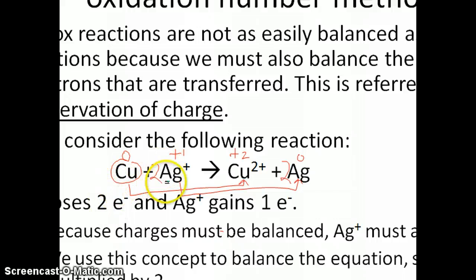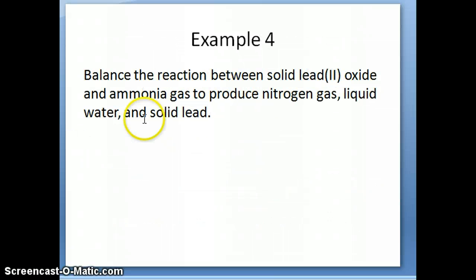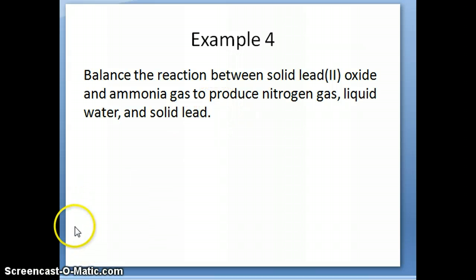You have to consider both the elements to be balanced, but you also have to consider that the charges have to be balanced. Now we're going to apply that concept to this reaction: solid lead(II) oxide and ammonia gas produce nitrogen gas, liquid water, and solid lead. We want to balance this reaction by considering both conservation of atoms as well as conservation of charges.